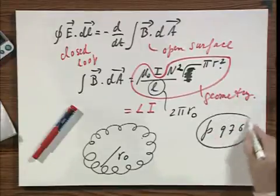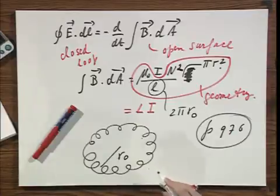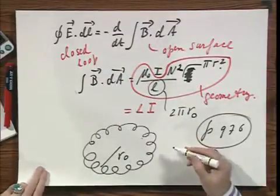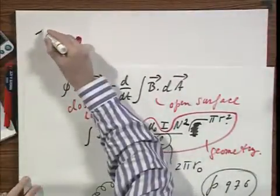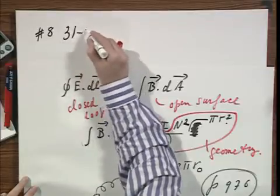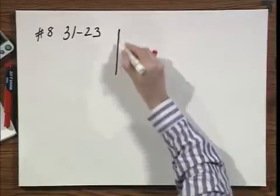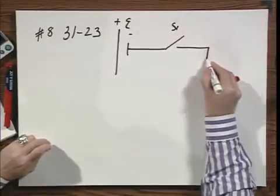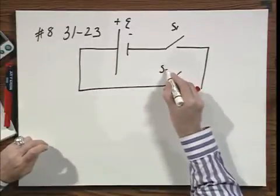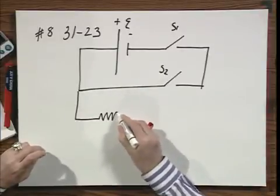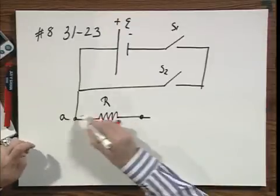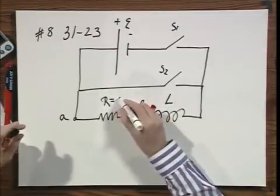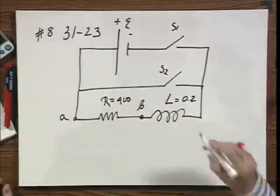If you look at page 976 of your book, that's exactly what you find for a toroidal surface. Now that we have prepared this, and we keep in mind that the open surface integral B dot DA equals L times I, we can now tackle easily problem number eight, which is the last problem from the assignment. We have: plus, minus, a switch S one, switch S two, resistance R. This point is called A, this point is called B. Self-inductance — which we now understand, we call a solenoid a self-inductance. The R was 400 ohms and the L had a value of 0.2 Henry.